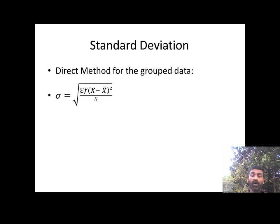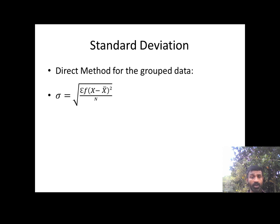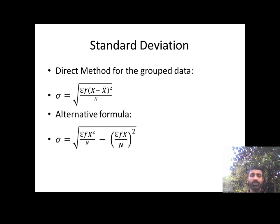We need the arithmetic mean x-bar first. And then we have an alternative formula as well. The alternative formula is the square root of: sum of fx² by N, minus (sum of fx by N) whole square.